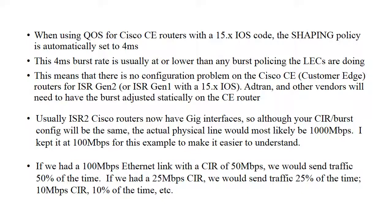The good news is that when we apply QoS traffic shaping to a Cisco router with newer IOS 15 code — typically ISR Gen 2 CE routers, any Cisco router with a 9 in it: 1900, 3900, etc. — the burst rate is automatically set at four milliseconds. This would be 200 K on a 50 meg link. A lot of ISR Gen 1 routers — 2800, 3800 — can support IOS 15 code, but most 12.x IOS codes are around a 25 millisecond burst rate when shaping is applied. So you may want to statically set the burst rate if you're on an older code or using ADTRAN or some other vendor.